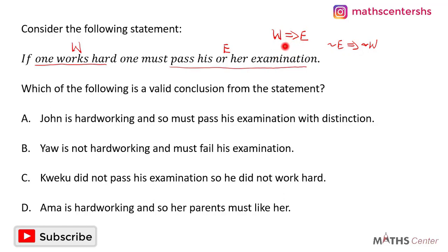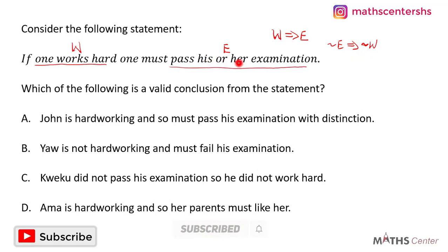If W implies E, the valid conclusion we can draw is that the negative of E implies the negative of W. E represents those who pass their examination, so the negative of E means the person will not pass. W represents someone who works hard, so the negative of W is someone who does not work hard. Therefore, the negative of E implies the negative of W means: if someone does not pass his or her examination, it implies that the person did not work hard. The option that describes this conclusion is C.